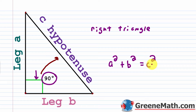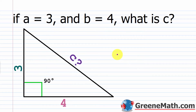We're going to use the Pythagorean formula to develop a distance formula that tells us the distance between two points on a coordinate plane. But first, let's look at a quick sample problem. If two of the three sides are known, we can solve for the third. Here, a is 3, b is 4, and we want to find c — the hypotenuse.